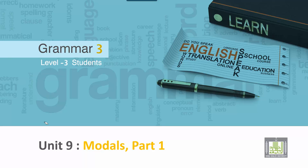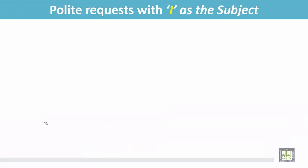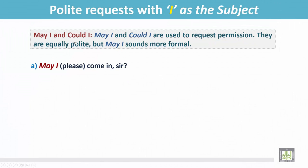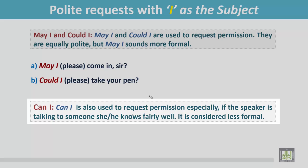Grammar 3 for Level 3 students, Unit 9: Modals, Part 1. Polite requests with 'I' as the subject — May I and Could I. May I and Could I are used to request permission. They are equally polite, but May I sounds more formal. Examples: May I come in, sir? Could I take your pen?